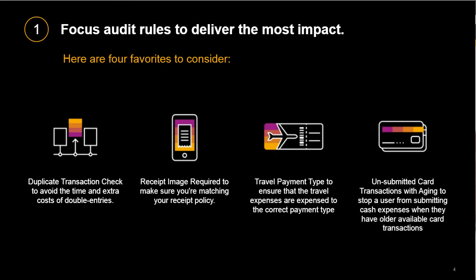At the same time, there are some important audit rules that many customers overlook. For example, the duplicate transaction check — this rule checks for duplicate transactions to avoid accidental dual entries that lead to double payments at worst, or extra oversight and administration time at best. If you have Concur Expense and are getting a data feed directly from your corporate card provider, this rule is extra useful, as employees often snap a photo of a receipt and forget to merge it with the charge from the corporate card.